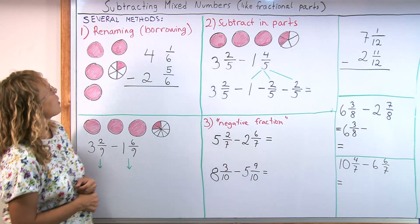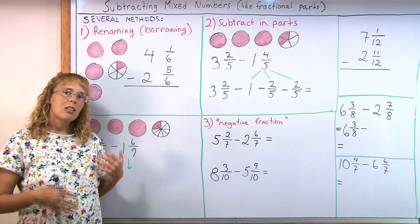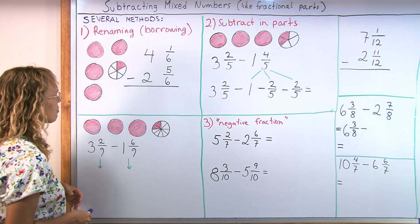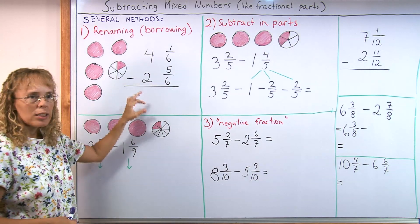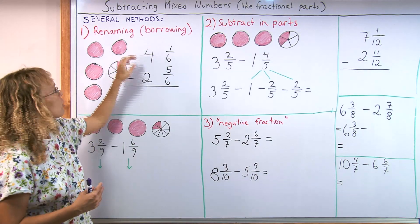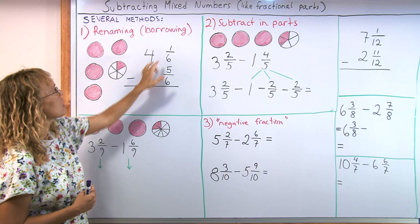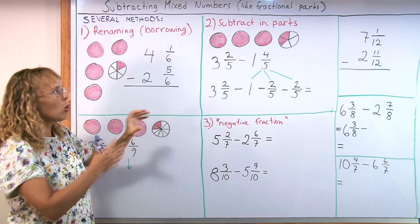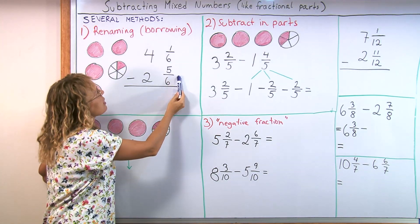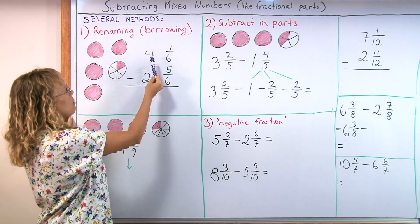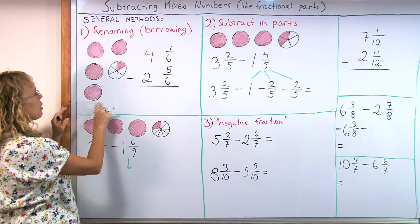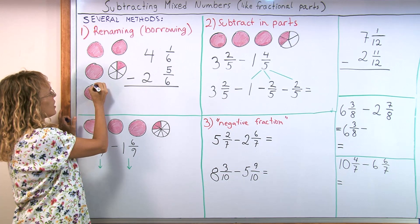So, let's get started. The first method we could call it renaming or borrowing, because it resembles the normal borrowing algorithm in subtraction. Let's say we have 4 and 1/6 take away 2 and 5/6. Now, we can try to subtract here in columns, so to speak. We subtract the whole numbers and then the fractional parts in their own columns. But as you notice, from 1/6 you cannot take away 5/6.